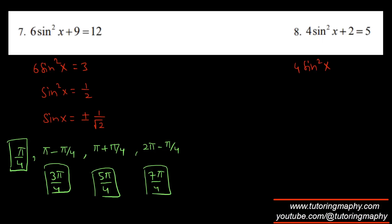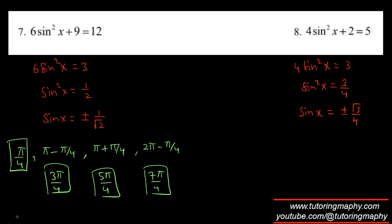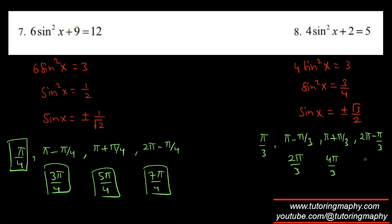Subtracting 2 from both sides gives 3, so sin²(x) = 3/4. Taking the square root gives sin(x) = ±√3/2. Solutions are in all four quadrants. The reference angle is π/3. Quadrant 1: π/3; quadrant 2: π − π/3 = 2π/3; quadrant 3: π + π/3 = 4π/3; quadrant 4: 2π − π/3 = 5π/3.